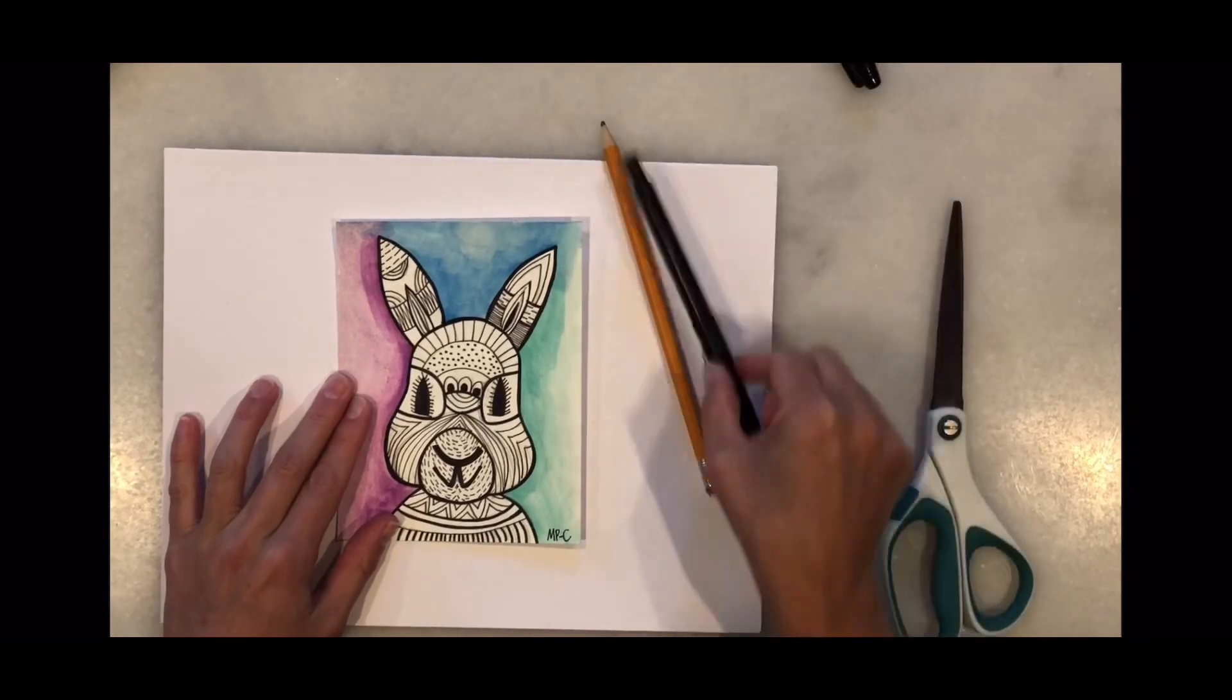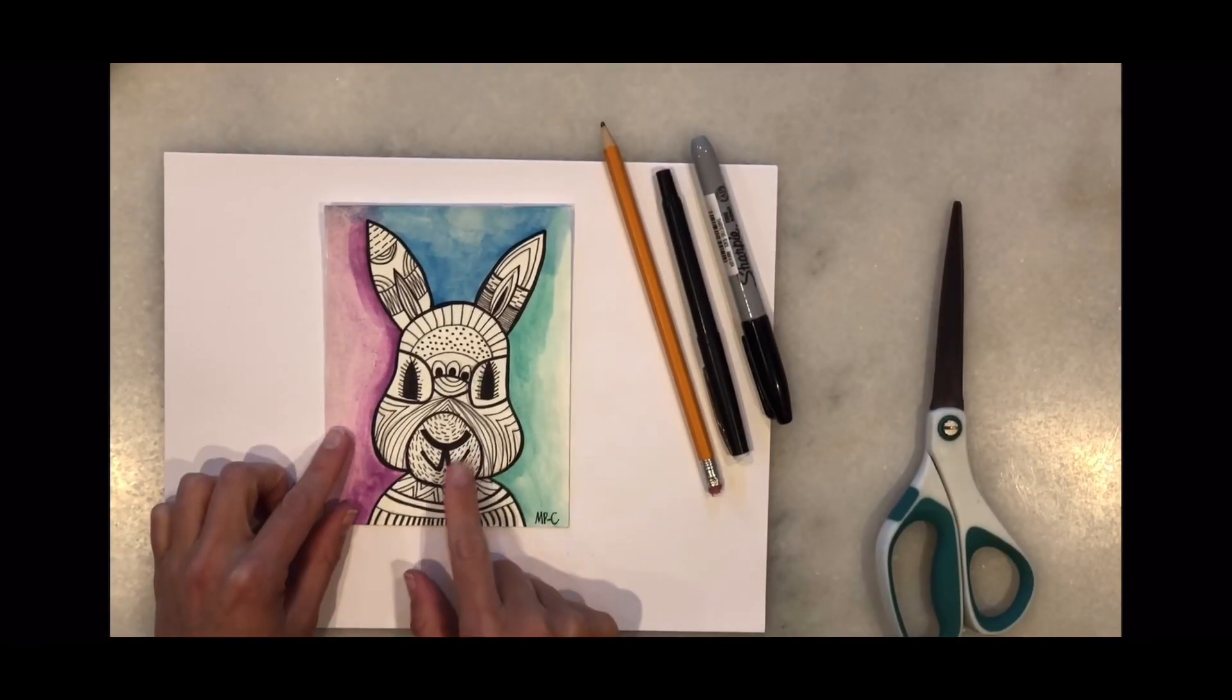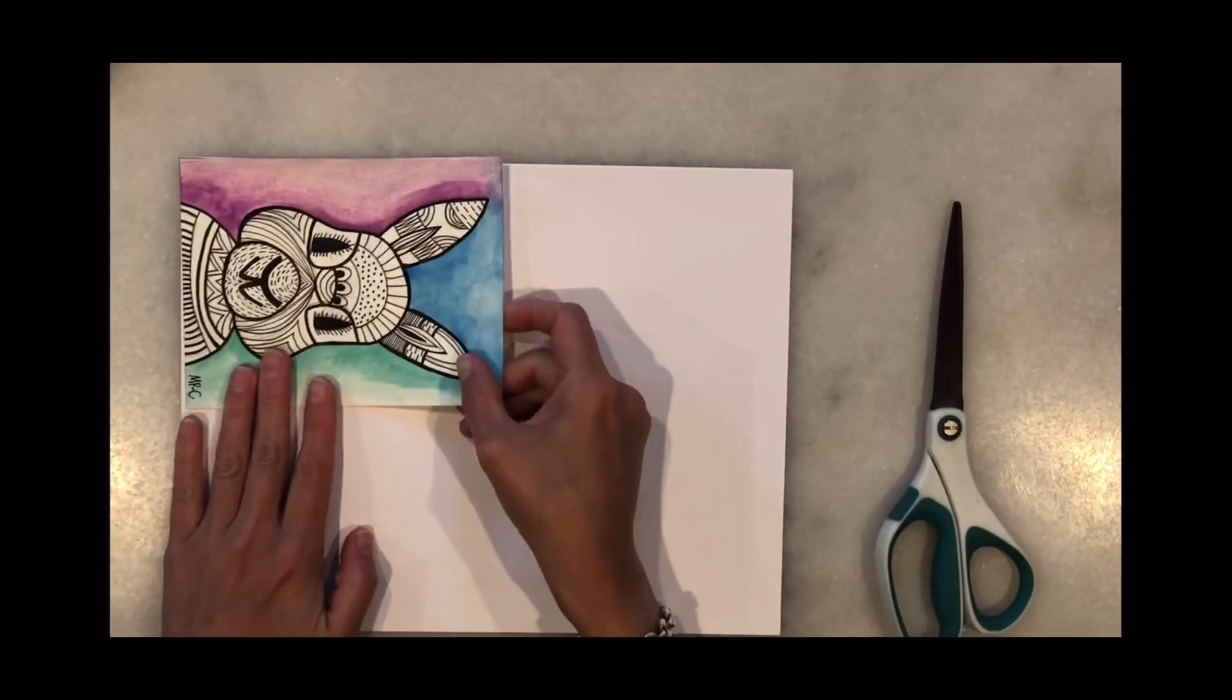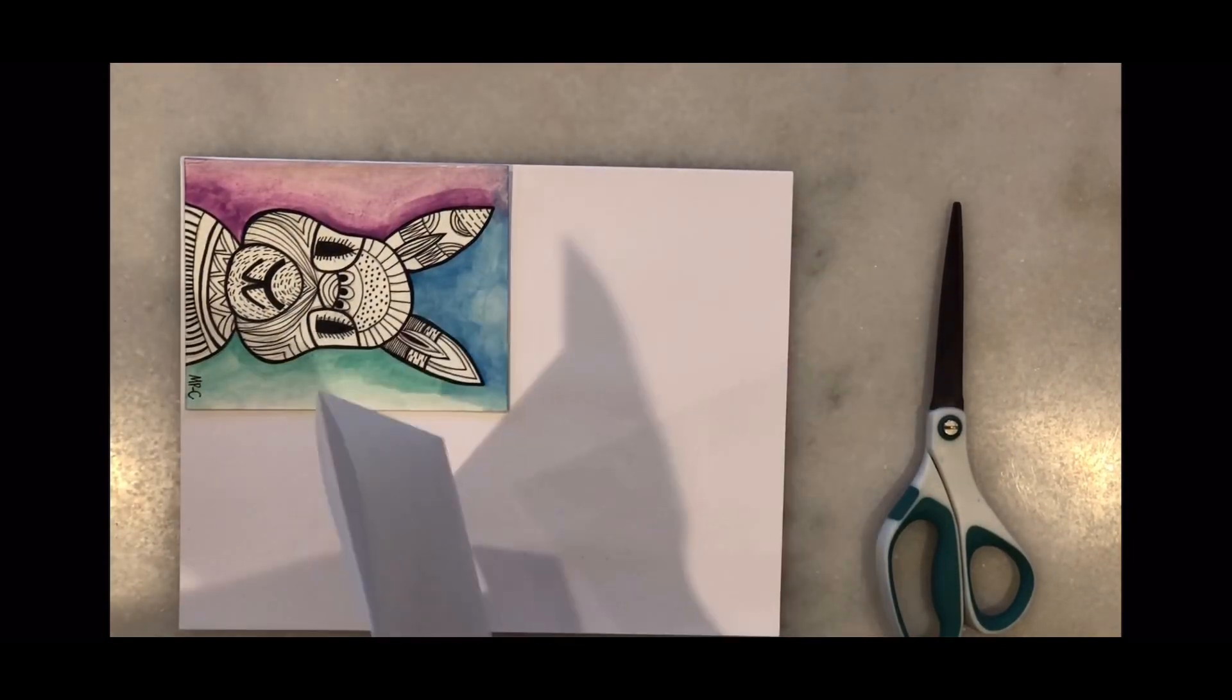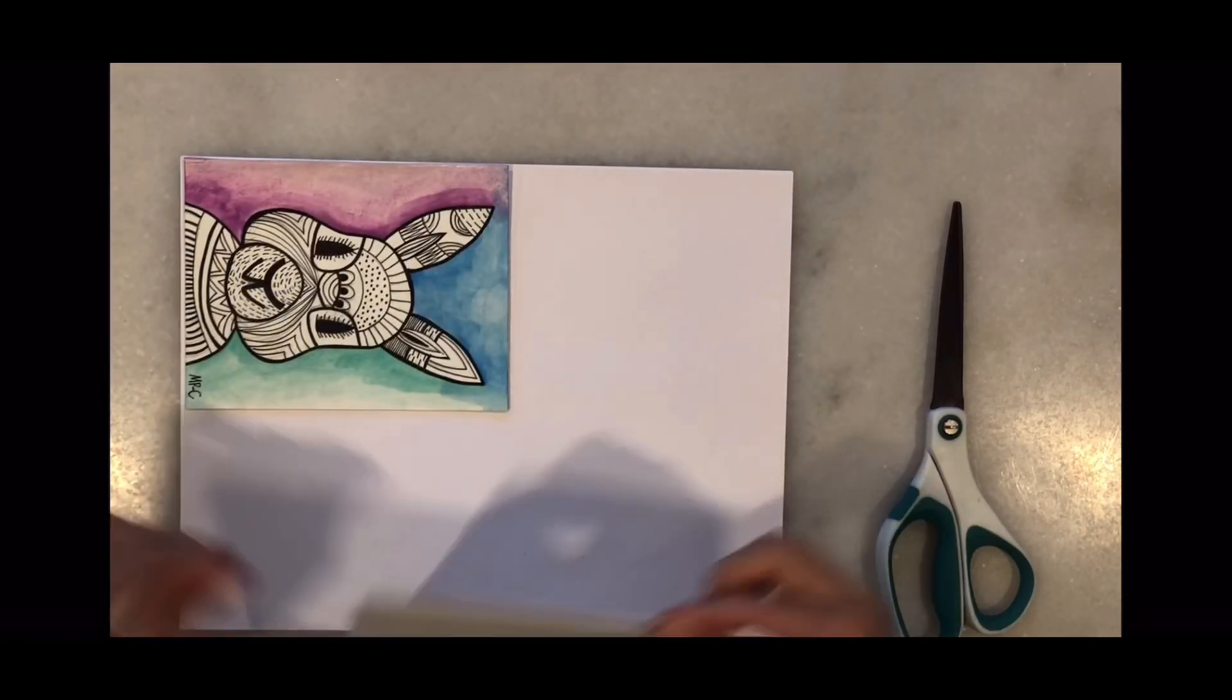Today we're going to create a Zentangle Easter Bunny using pencil and sharpie and some color. As you can see my paper is smaller than a regular paper, so what you're going to do is you're